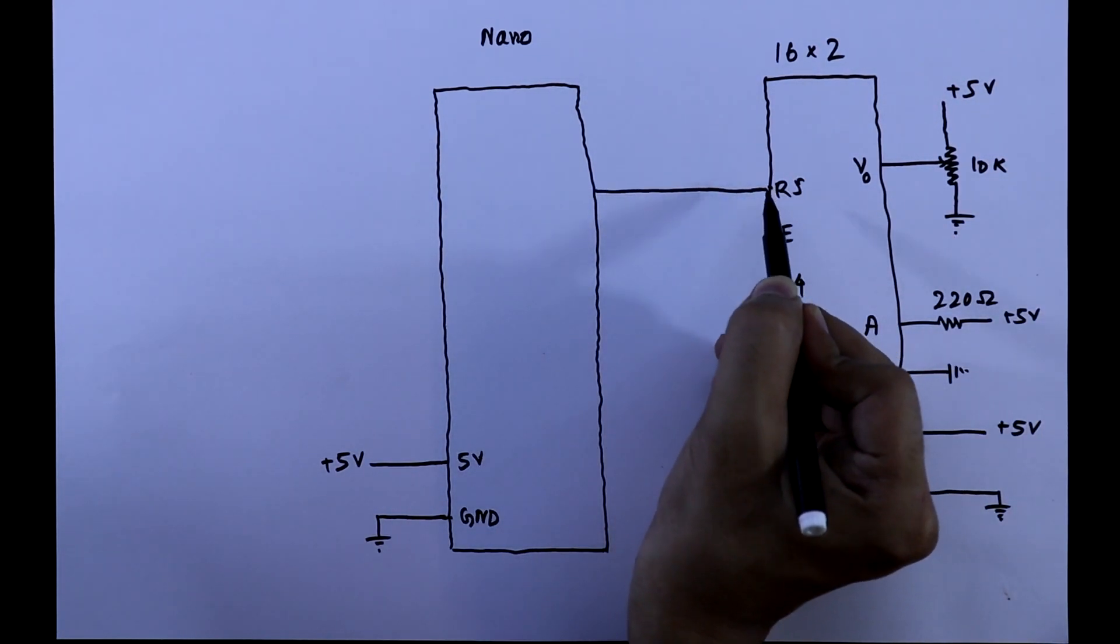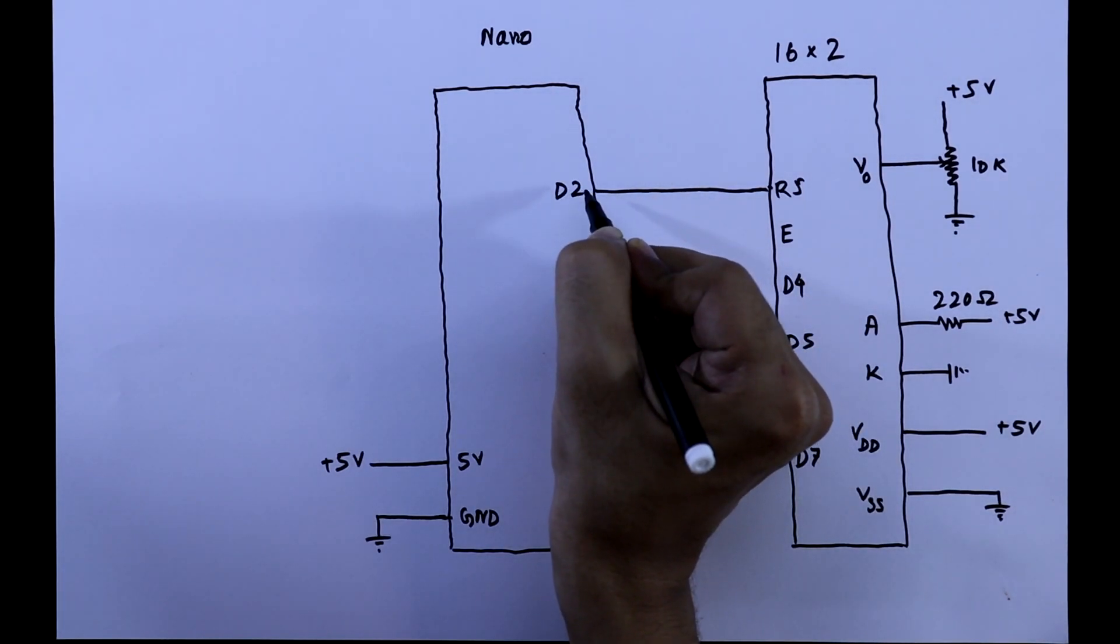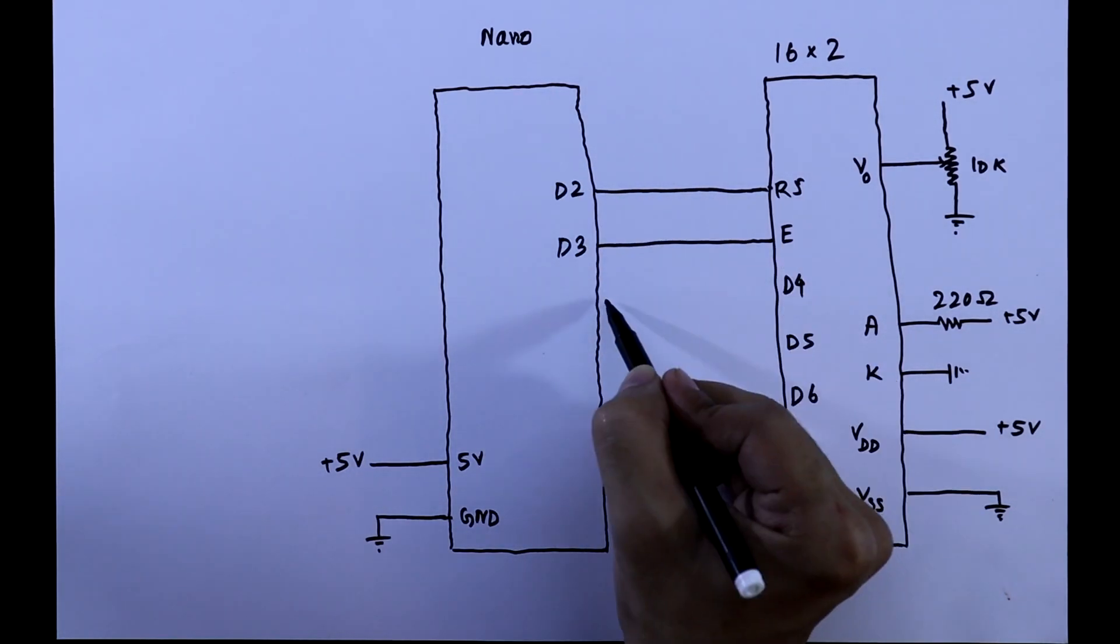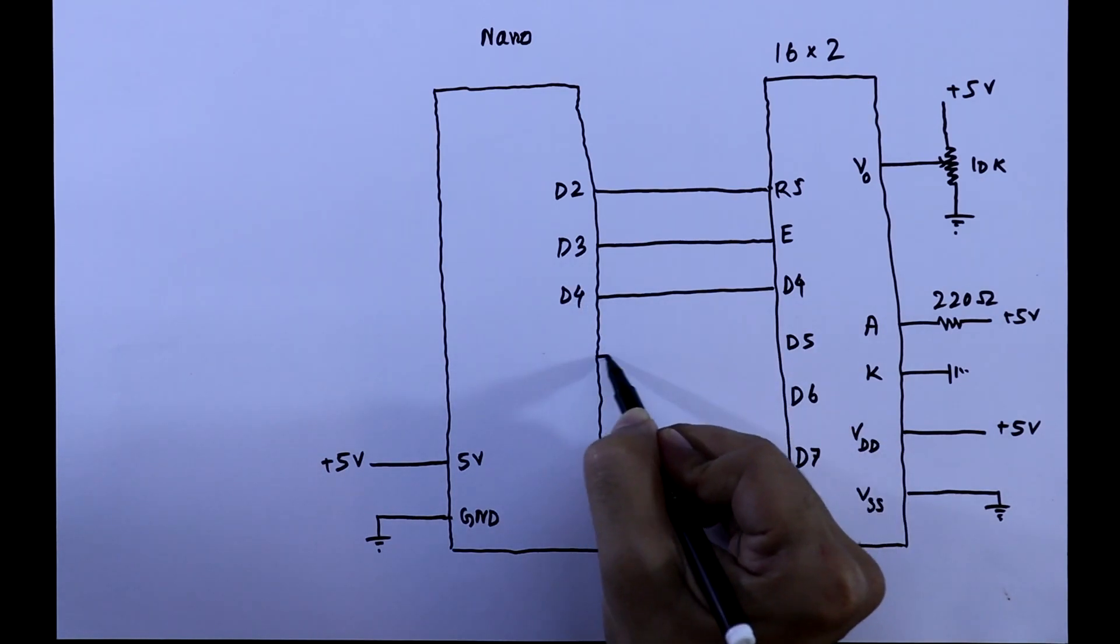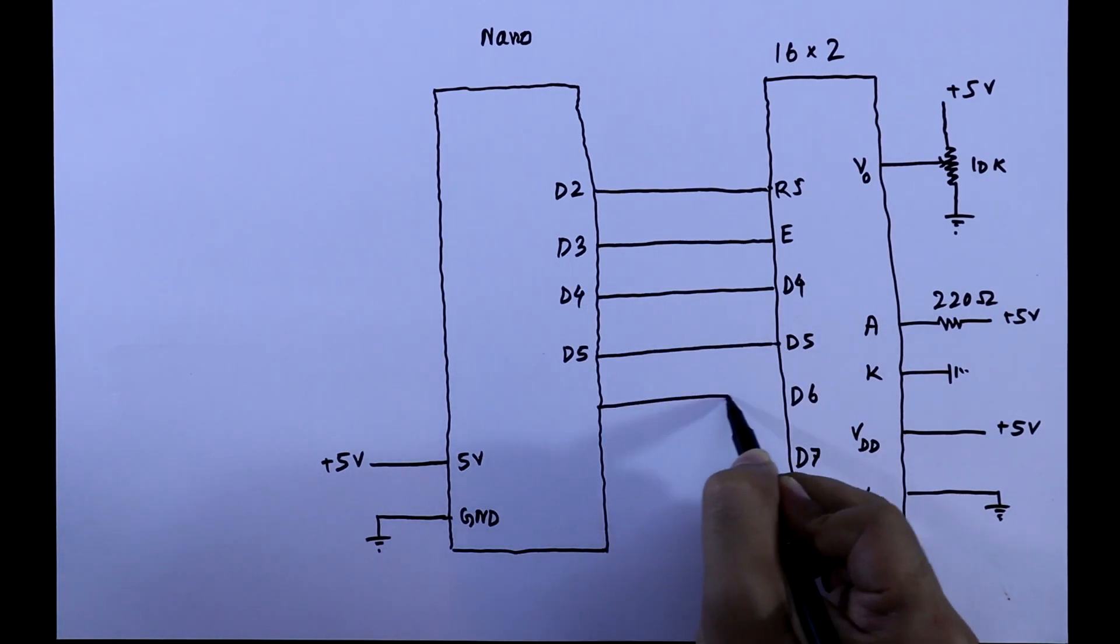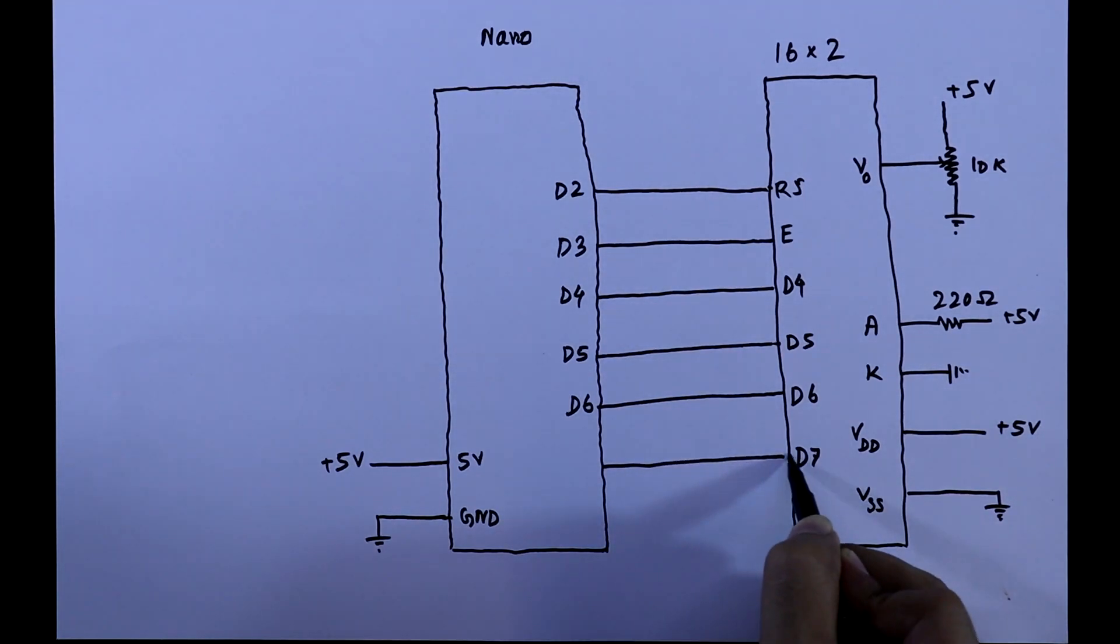RS pin of the display to the D2 of Arduino, E to the D3, D4 of display to the D4 of Arduino, D5 to D5, D6 to D6, D7 to D7.